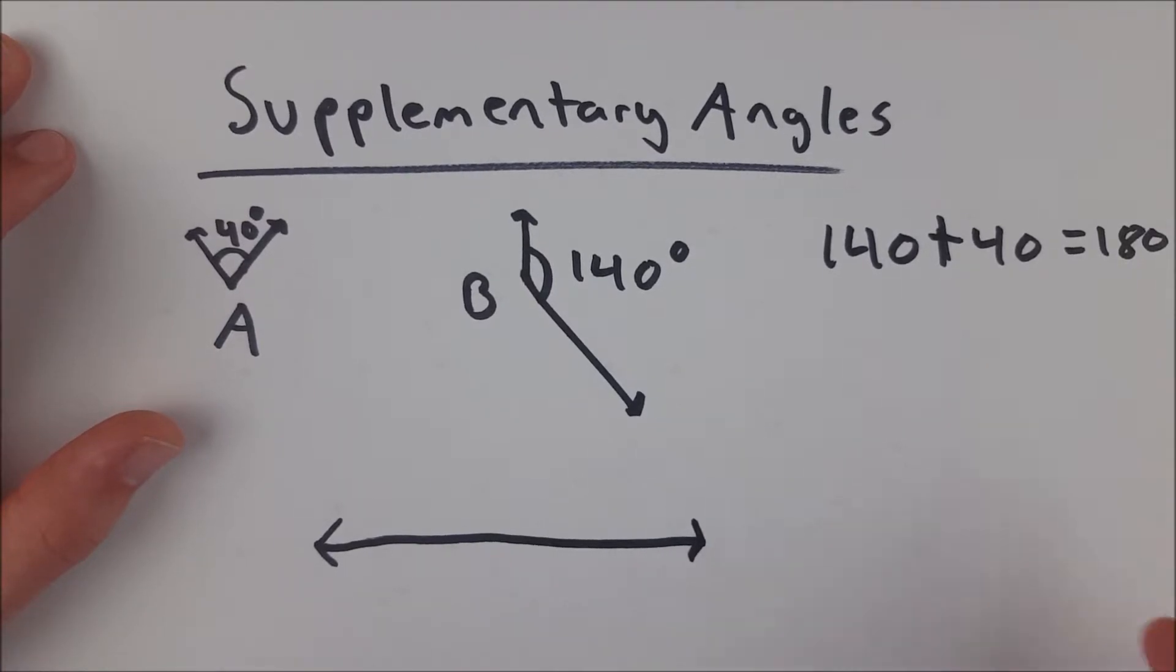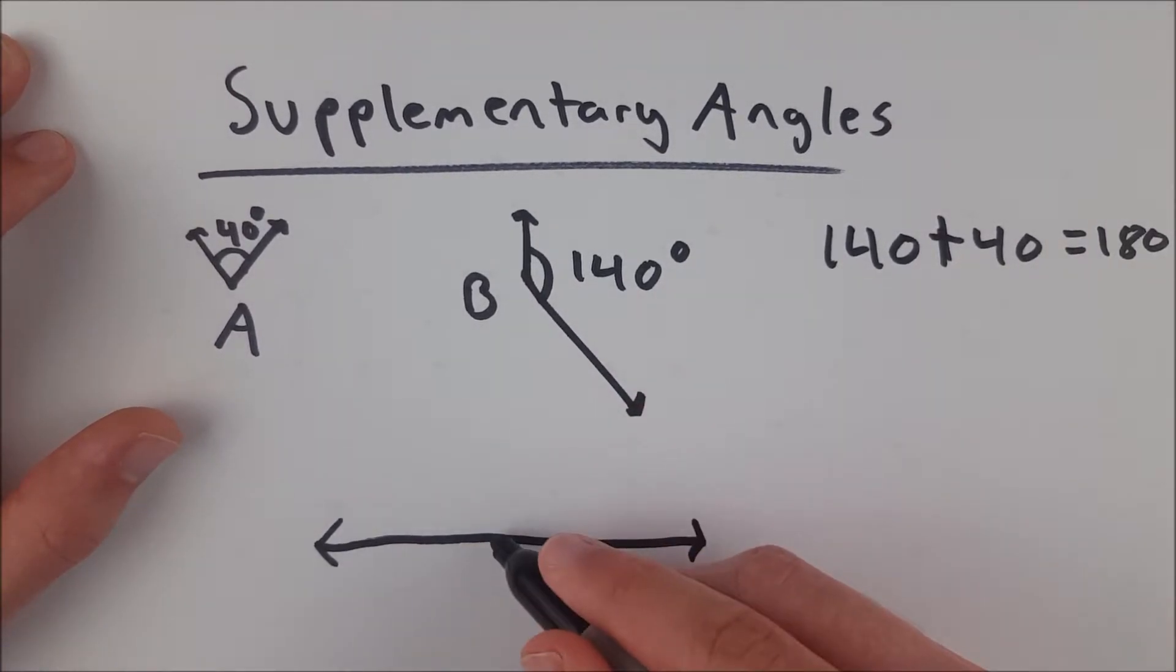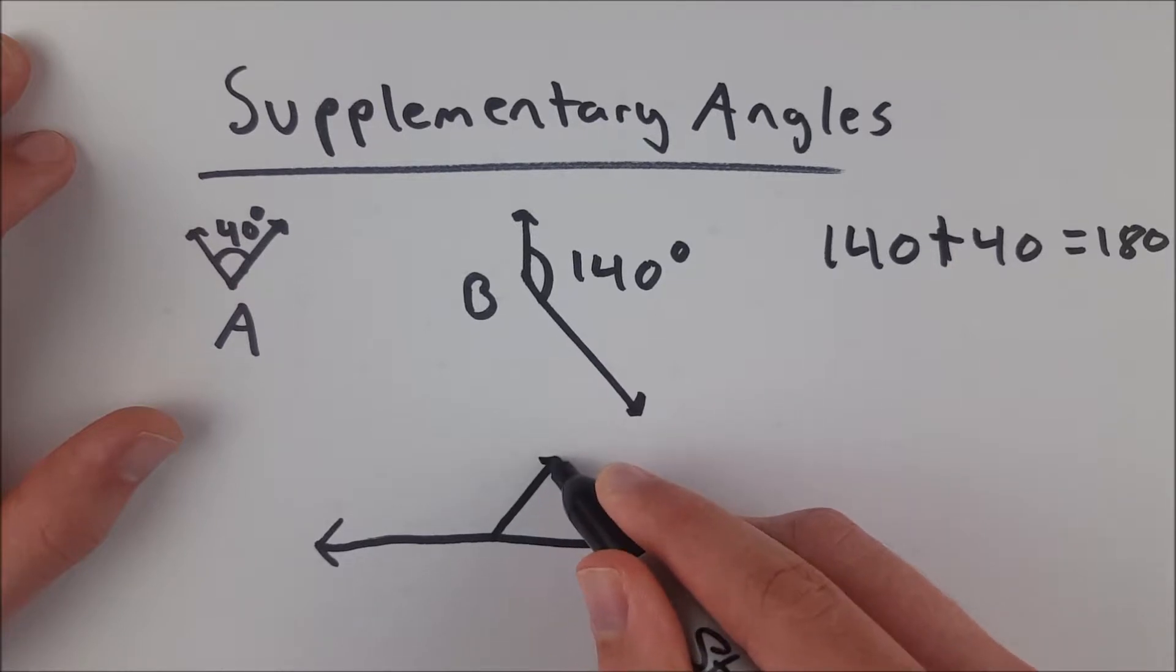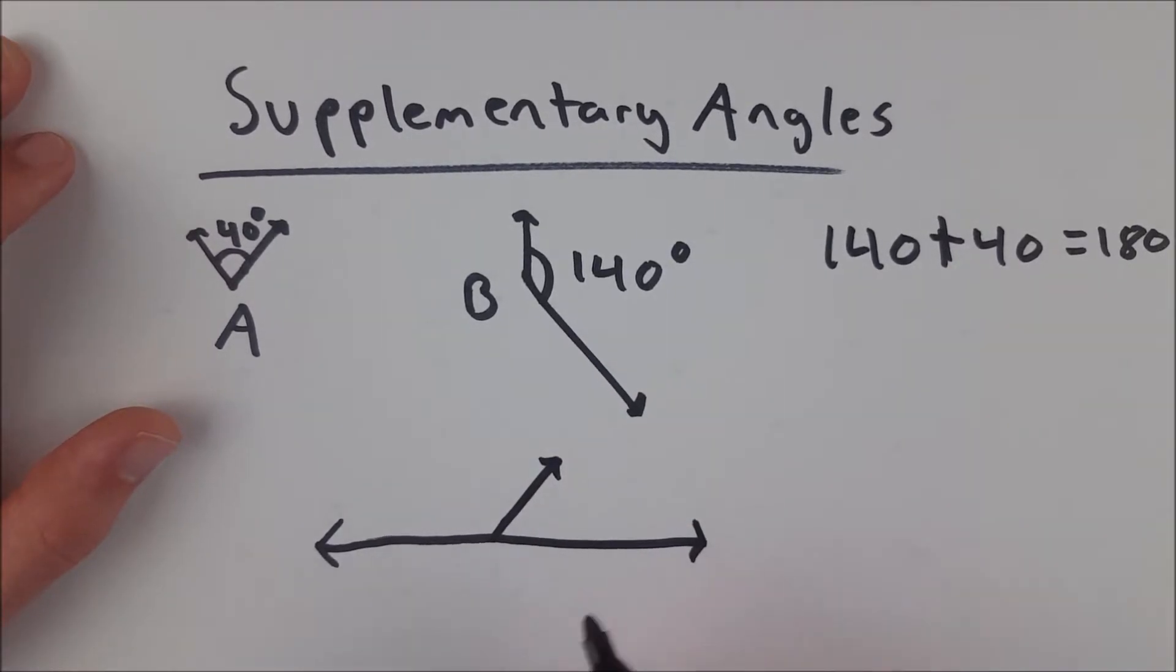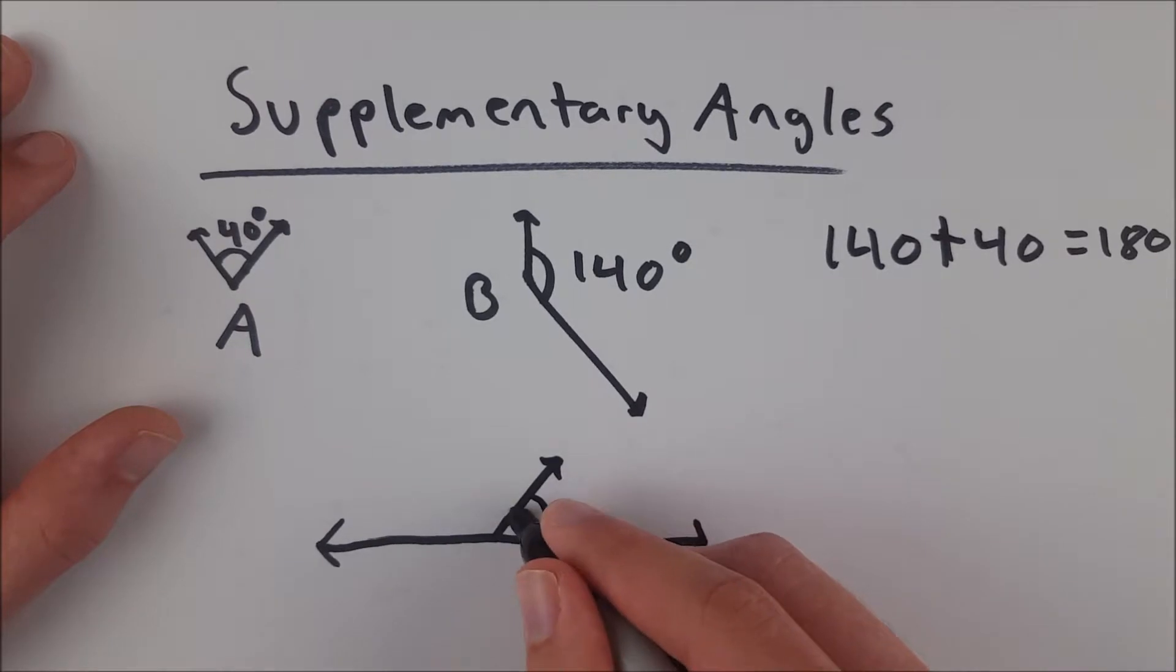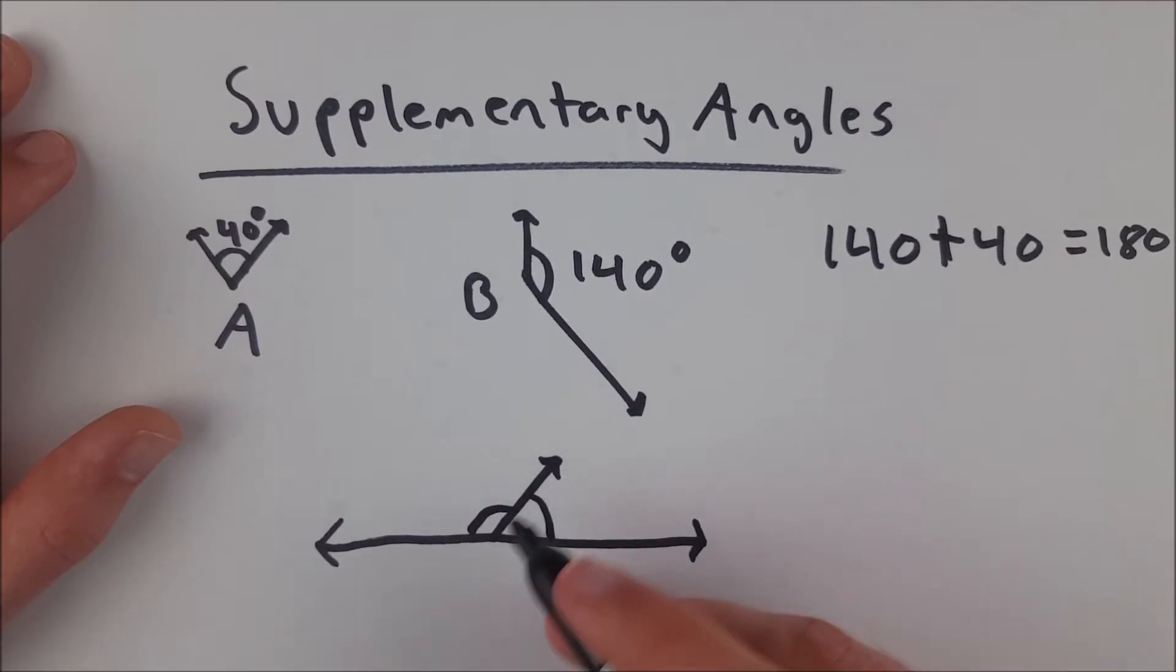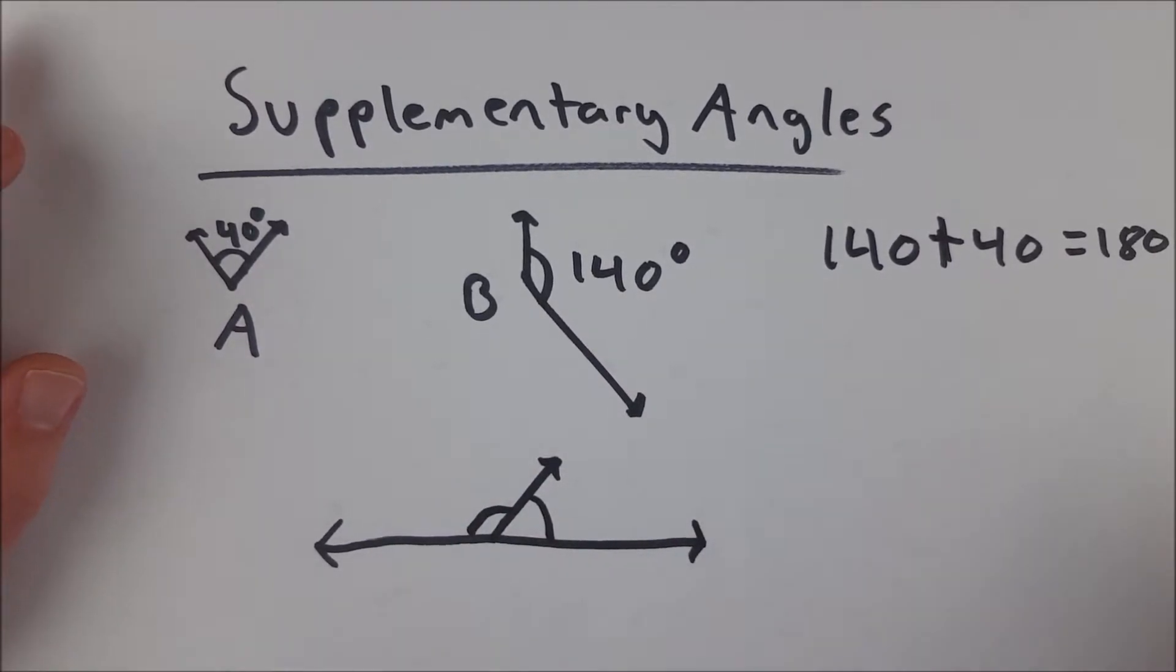A 180 degree angle looks like a straight line. So if we create another two angles here, let's say that we know this is a straight line, and we know there are two angles here, we don't need to know what their measures are to know that they are supplementary.